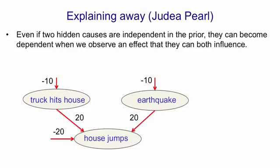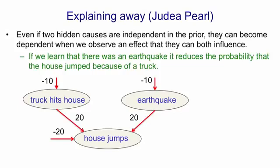However, if you assume both hidden causes, that has a probability of e to the minus 20. So that's extremely unlikely, even if the house did jump. So assuming there was an earthquake reduces the probability that the house jumped because a truck hit it. And we get an anti-correlation between the two hidden causes when we've observed the house jumping.